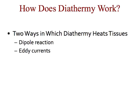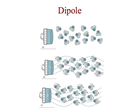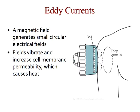There are two ways diathermy can heat tissue: the dipole reaction and eddy currents. In the dipole reaction, molecules whose ends carry opposite charges begin to rotate. The electromagnetic wave produced by the shortwave diathermy causes these dipoles to rotate, and as they rotate, friction occurs in the body and produces heat. The other method is eddy currents.